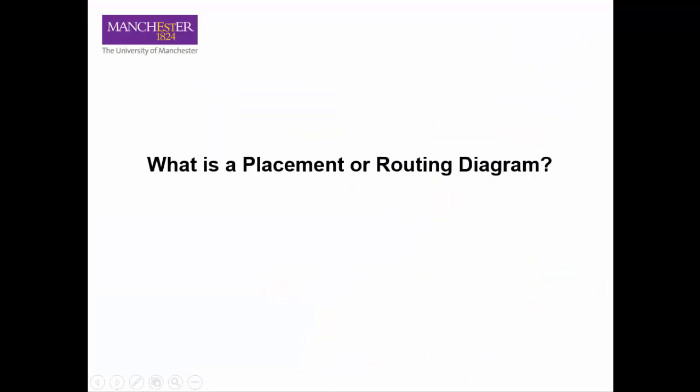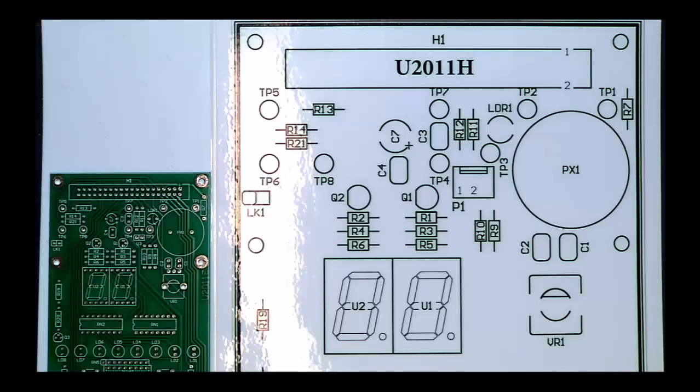What is a placement or routing diagram? A placement diagram is a physical representation of a circuit and shows where all of the components are placed on the PCB. This is the placement diagram for the I.O. board.